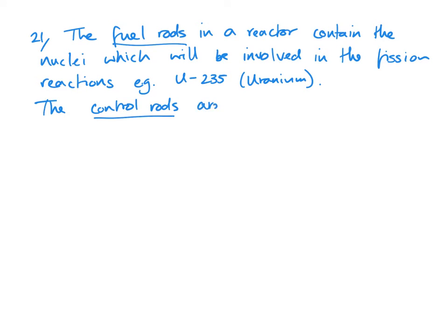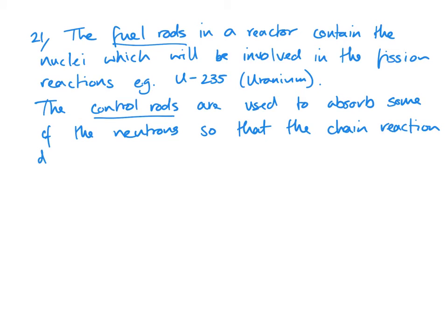The control rods are used to absorb some of the neutrons so that the chain reaction doesn't get out of hand. Basically you want to keep a stable number of neutrons roughly being produced each second.